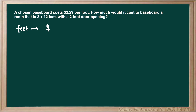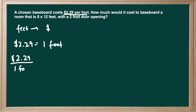The question gives us our relationship between feet and dollars by saying that it is $2.29 per foot. So that means for every $2.29 you get 1 foot of baseboards. Using this relationship, let's create our conversion factors — we can either have $2.29 per 1 foot, or 1 foot for every $2.29.